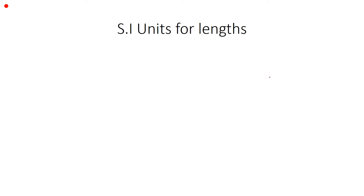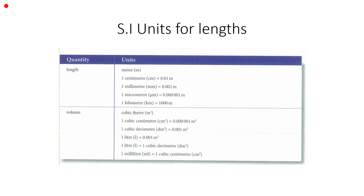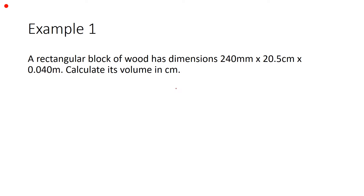The SI units for length: there are two units we will use to measure length and volume. For length we use meter (m), and for volume we use cubic meter (m cubed). According to the conversion table, one centimeter equals 0.01 meters and one millimeter equals 0.001 meters. You have to memorize these values to be able to make conversions in questions.